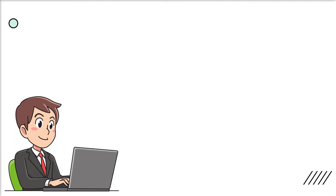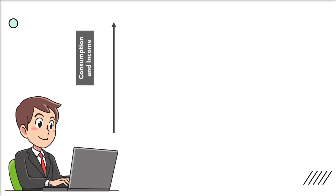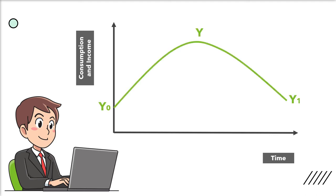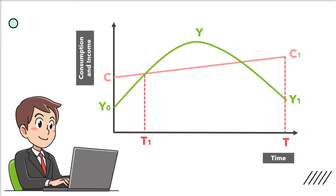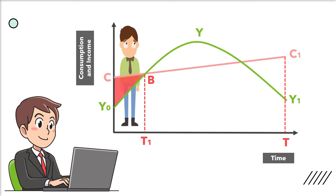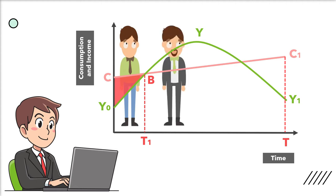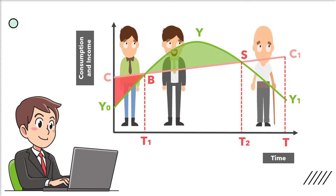Let's look at this in the form of a diagram. The x-axis shows the consumption level of the individual and the y-axis shows the lifetime of the individual consumer. The Y0-Y1 curve shows the individual consumer's income stream during his lifetime T. The C-C1 curve is the consumption during his lifetime. During the early period of his life represented by T1, he borrows or dis-saves C-Y0-B amount of money to keep his consumption level C-B which is almost constant. In the middle years of his life represented by T1-T2, he saves B-S-Y amount of money to repay his debt and for the future. And in the last years of his life represented by T2-T, he dis-saves S-C1-Y1 amount.